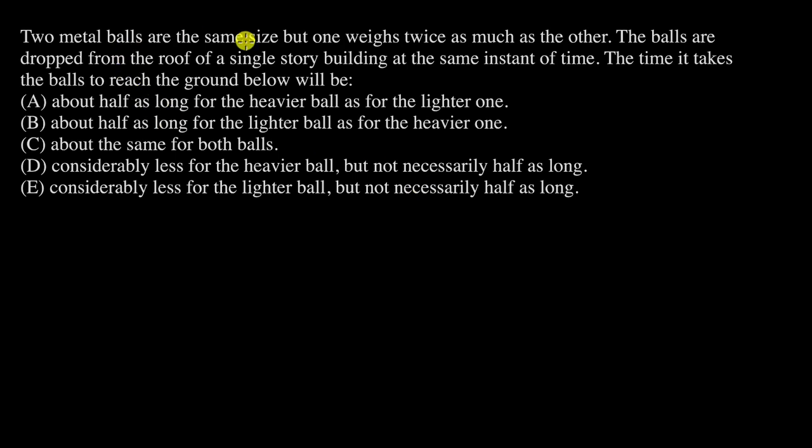Here we have two metal balls which are of the same size but one weighs twice as much as the other. Let's draw two metal balls - here's the first one and here's the second one. Weight of one is twice as much as the other. We can think of it as mass as well. Even though mass and weight are not the same, for simplification let's write this as 2M and this is M.